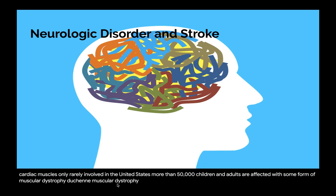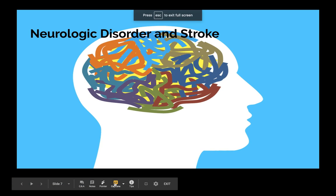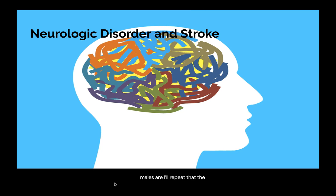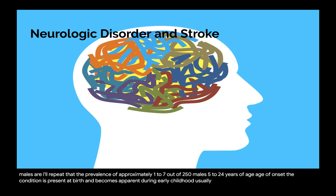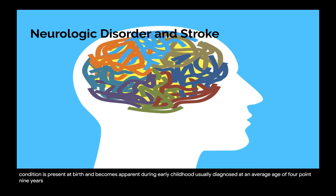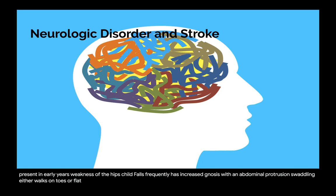Duchenne muscular dystrophy (DMD) is primarily limited to males and transmitted by female carriers, with a prevalence of approximately 1 to 7 out of 250 males aged 5 to 24 years. The condition is present at birth and becomes apparent during early childhood, usually diagnosed at an average age of 4.9 years. Pseudohypertrophy of certain muscles, particularly the calves, is present in early years. The child falls frequently, has increasing difficulty standing erect, develops lordosis with abdominal protrusion, and exhibits a waddling gait. Progressive muscular wasting eventually involves thighs, shoulders, trunk, and respiratory muscles.